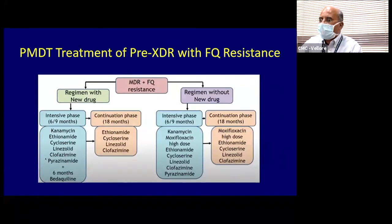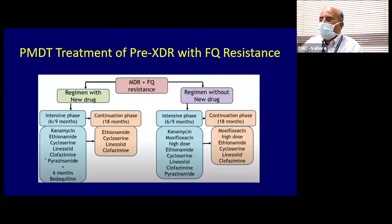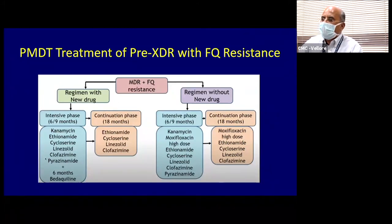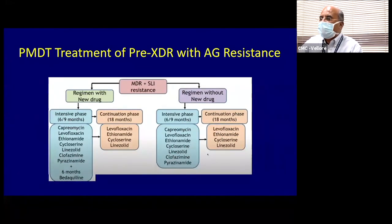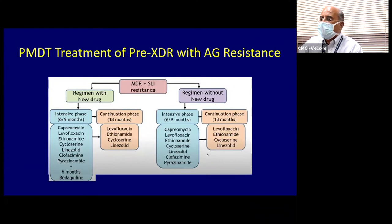The national program recommends bedaquiline-containing regimens when there is fluoroquinolone resistance: bedaquiline for the initial six months followed by a four-drug continuation phase for 18 months. Without bedaquiline, an alternate regimen with moxifloxacin is added. For second-line injectable resistance, bedaquiline is used in the intensive phase along with quinolones, ethionamide, cycloserine, and linezolid in the continuation phase. If aminoglycoside resistance is present, capreomycin is recommended.